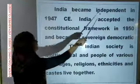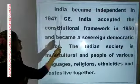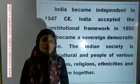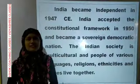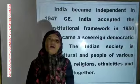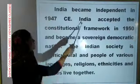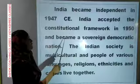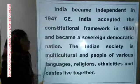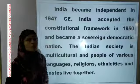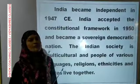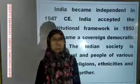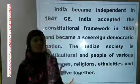India became independent in 1947 CE — CE means Christian Era. India got independence on 15 August 1947. India accepted the constitutional framework in 1950 and became a sovereign democratic nation. India ne 1950 mein constitutional framework accept kiya aur it became a sovereign — sovereign means independent — democratic nation.